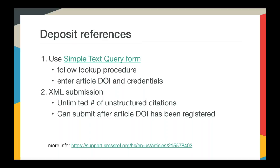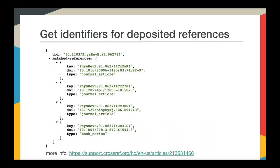You can also include references in your XML content registration files, either as part of the initial submission or added to a record after it's been registered. We allow you to deposit as many unstructured citations as you need using XML — we don't impose our matching limits on reference deposits; we'll try to find DOI matches for all of them. We also have an API you can use to retrieve DOI matches for references you've deposited for a given DOI. This means that if you deposit references, you don't need to query separately — you can deposit and either review your logs for matches or use our GetIdentifiers API to retrieve our current list of DOI matches for your articles.